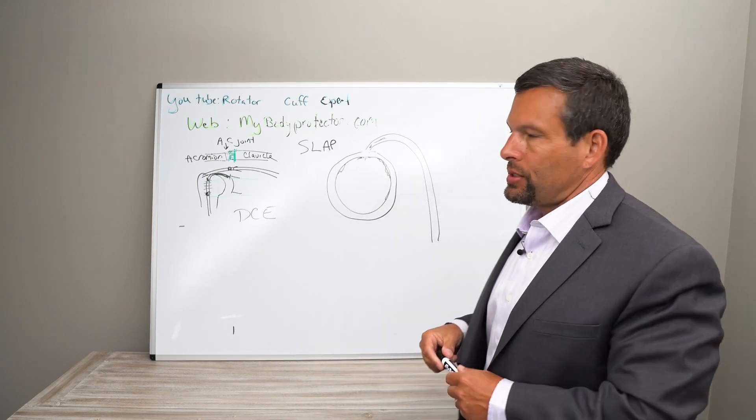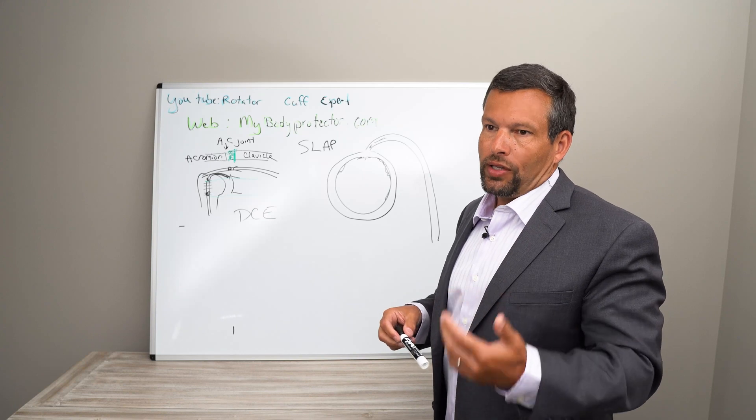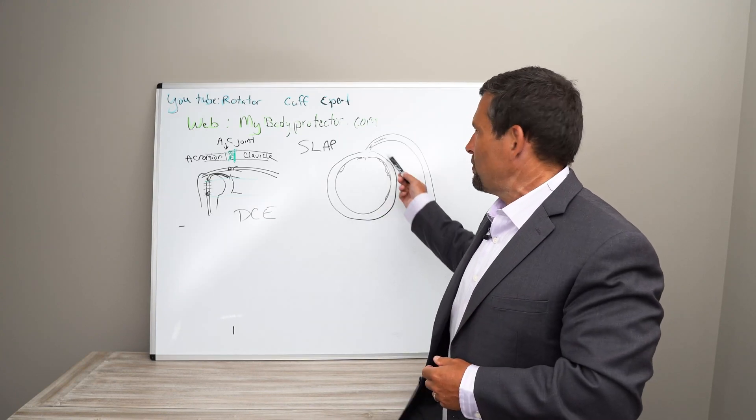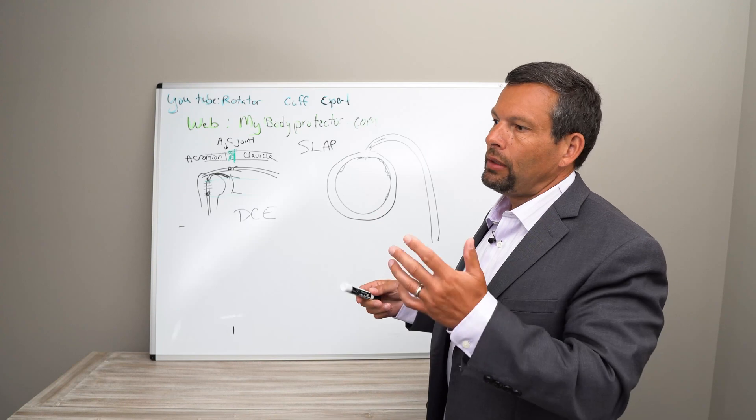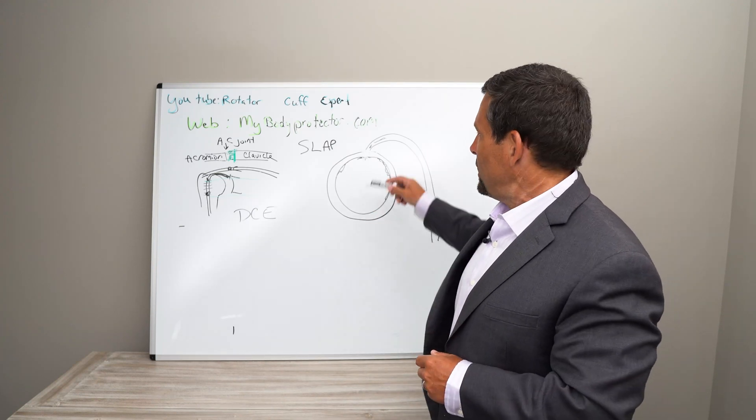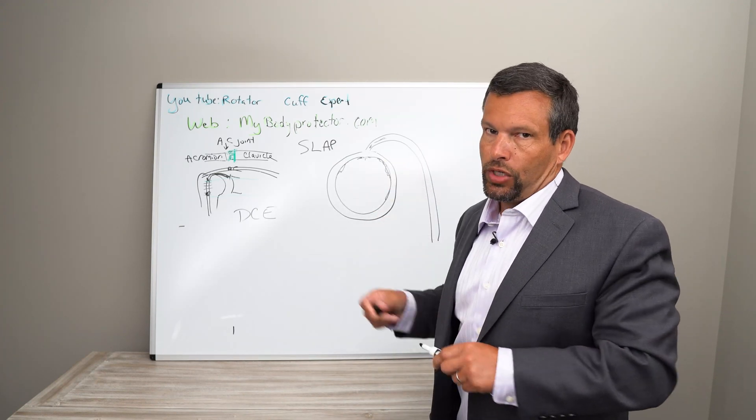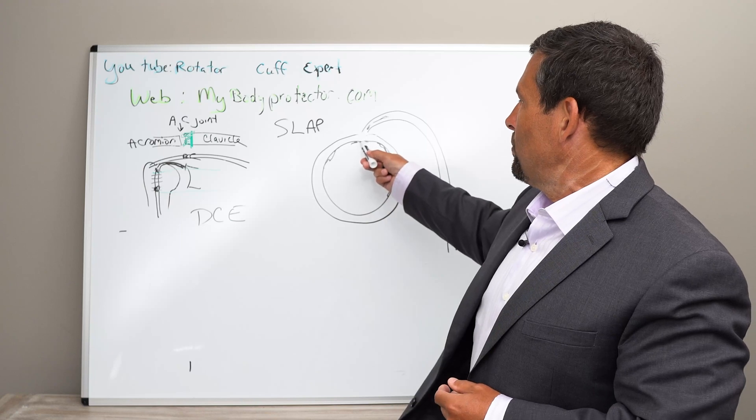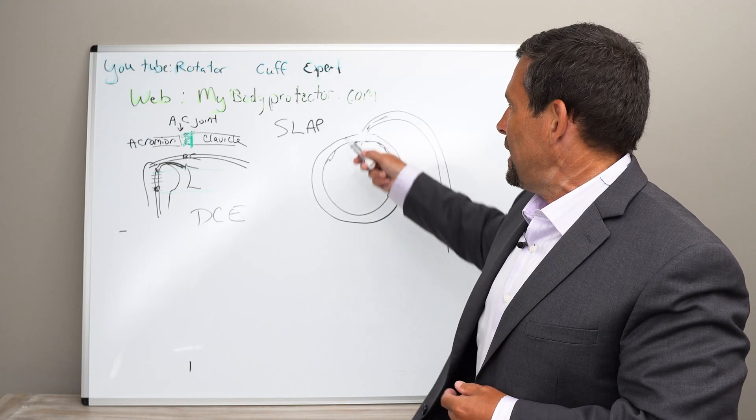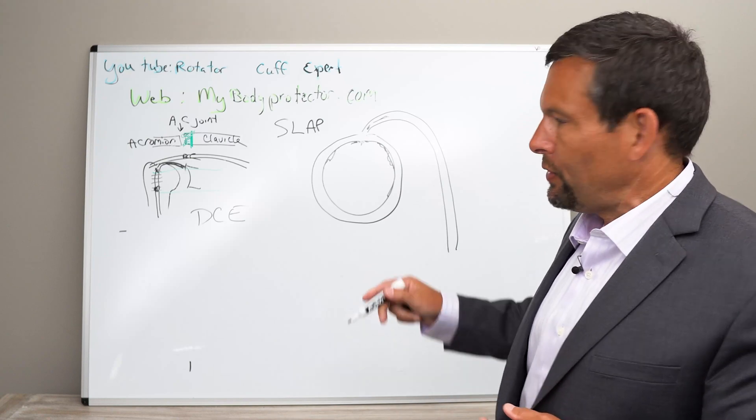There's a few different kinds of SLAP tears. The most common SLAP tear that we see is just some degeneration, some fraying. We go in there, we clean it up. It's not really a big deal. But the next most common is an unstable SLAP tear, which means this biceps as well as the labrum are pulling off from the bone, and we have to do something different.